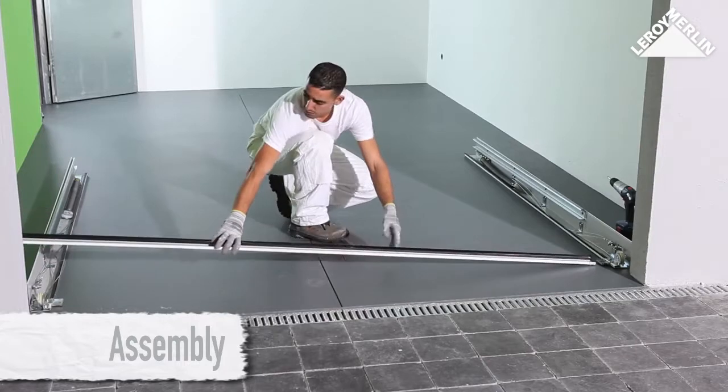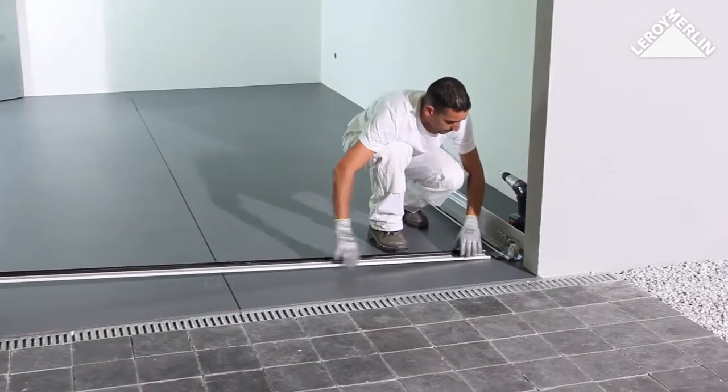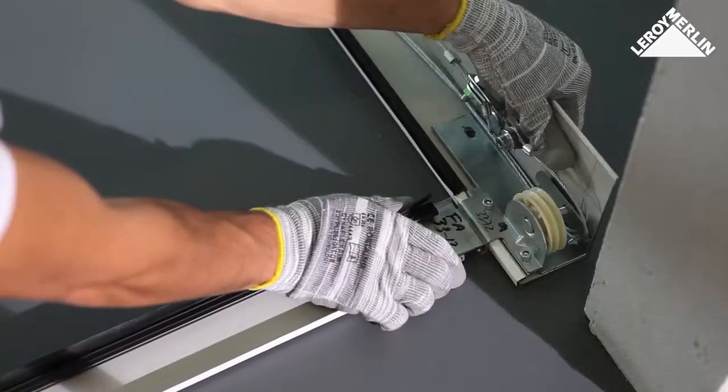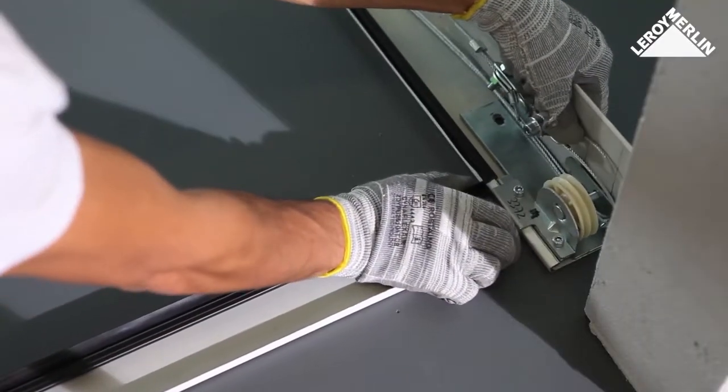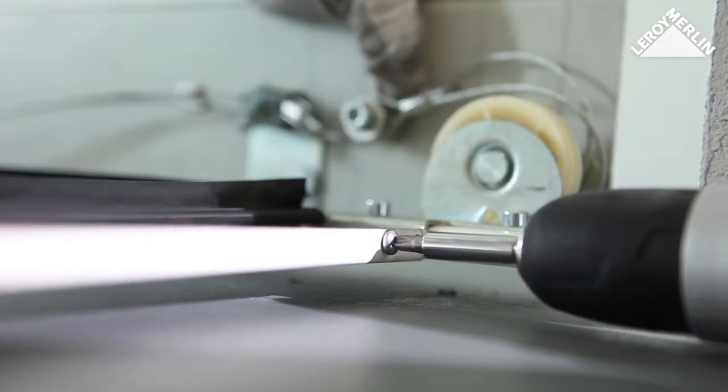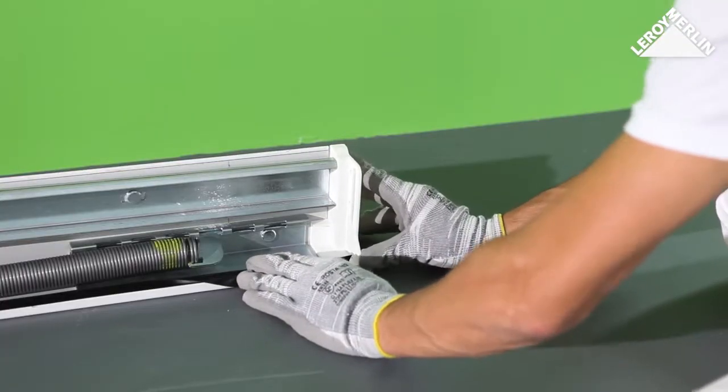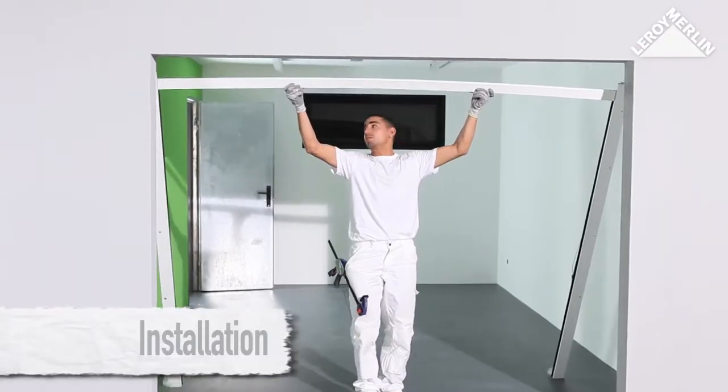Assembly: Place the two vertical guide rails and the lintel cross member on the ground. Line everything up then fit together, screwing the fixing brackets in place. Push the end caps onto each rail.